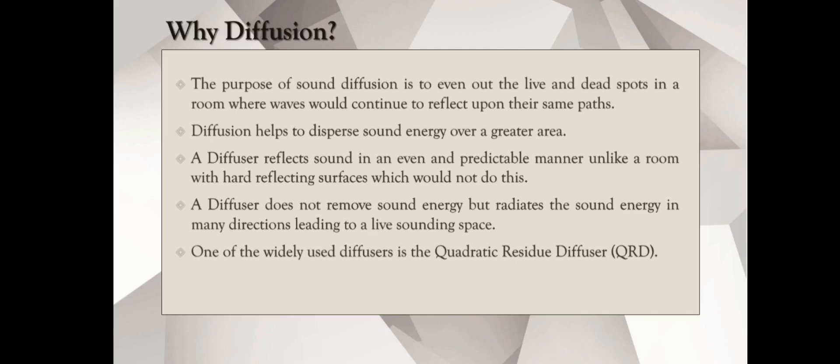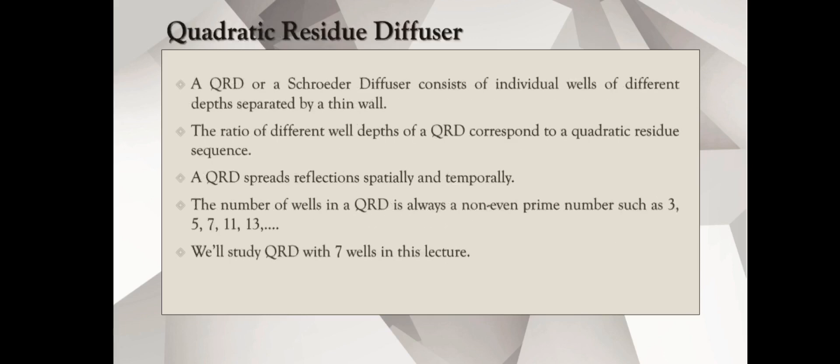One of the widely used diffusers is a quadratic residue diffuser, also known as a QRD. A QRD, or also known as a Schroeder diffuser, consists of individual wells of different depths separated by a thin wall. The thin wall is also referred to as a fin. Ratio of different well depths of a QRD correspond to the quadratic residue sequence.